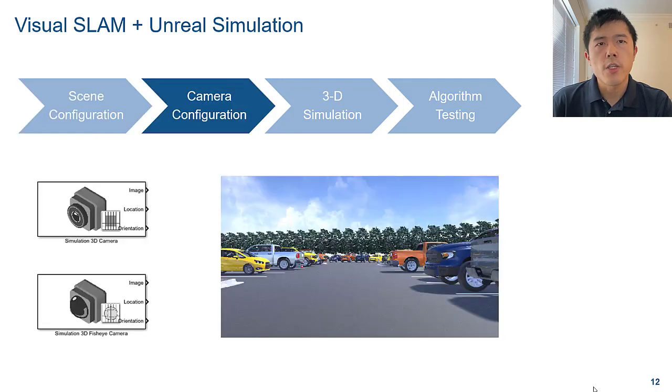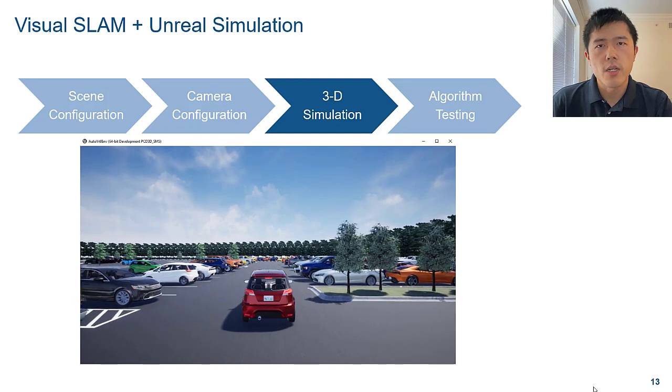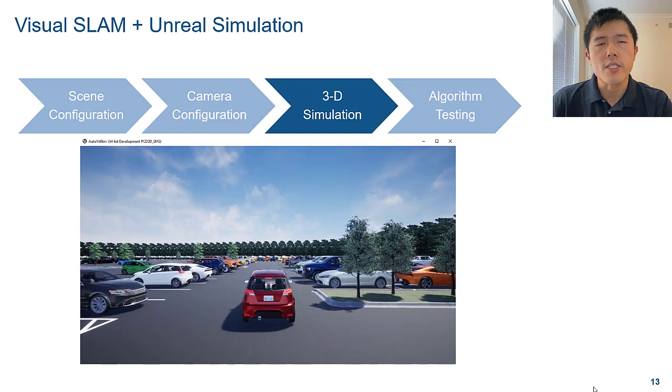Next, you need to configure the camera sensors. We support two types of cameras: pinhole and fisheye. They output the perceived images and the ground truth as well. Once we set up the scene and the cameras, you can run the simulation to generate data.